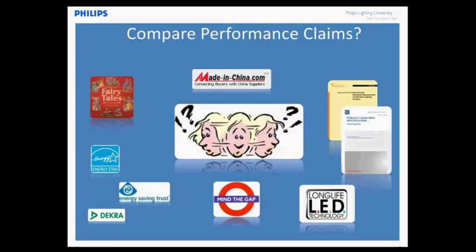LEDs are a relatively new technology for the lighting industry and obviously have many opportunities, but they are also creating confusion amongst users. You are confronted with long life, new entrants in the market, new brands popping up, too-good-to-be-true claims, US standards LM79 and LM80, and now international IEC standards dealing with the same topic, plus LED quality labels coming up. This leads to a situation where you as a user often unknowingly start to compare apples and pears when you consider LED luminaires in a project.